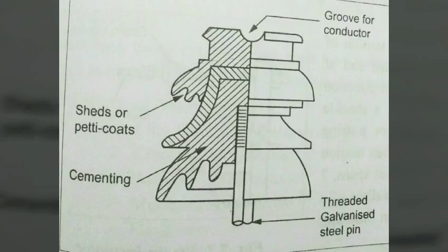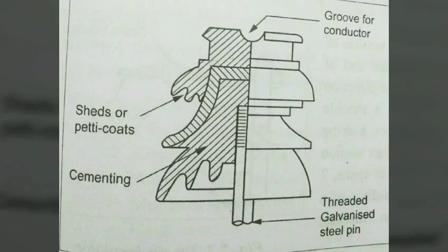Types of insulators. First, we will discuss pin type insulators. Pin type insulators are secured to the cross arm on the pole. The conductor is bounded into a groove on the top of the insulator. An adequate length of leakage path is obtained by providing the insulator with two or three petticoats or rain sheds.